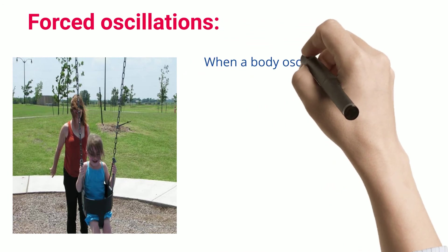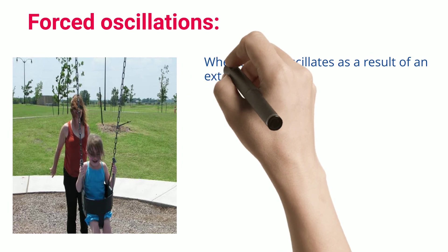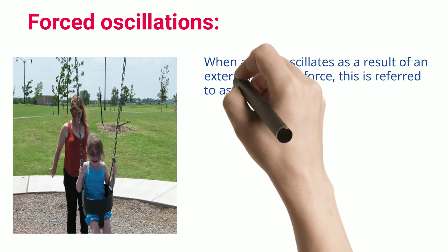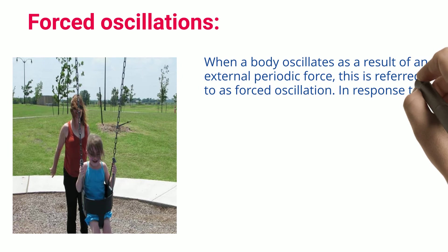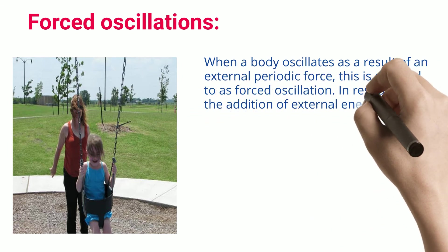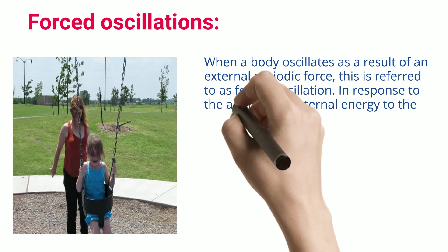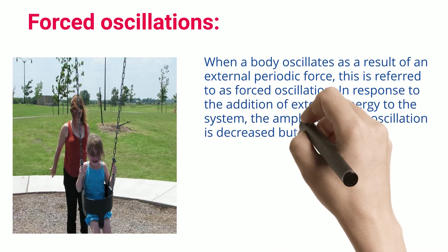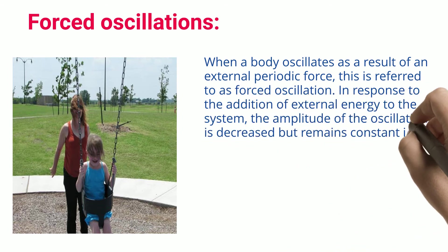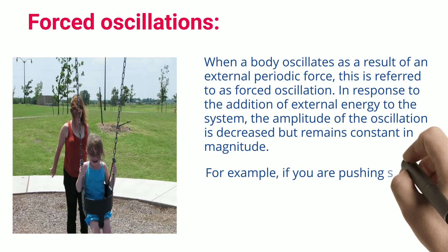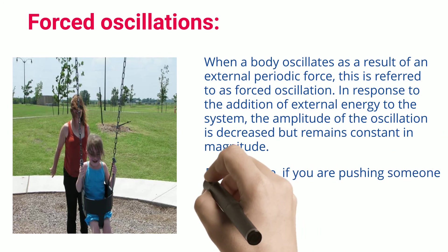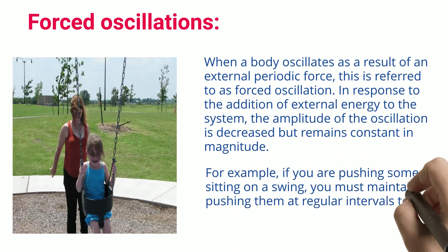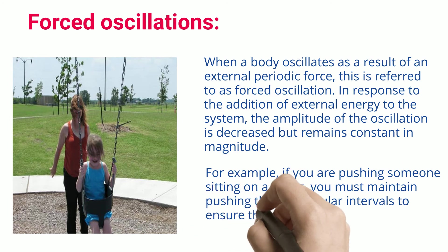When a body oscillates as a result of an external periodic force, this is referred to as forced oscillation. In response to the addition of external energy to the system, the amplitude of the oscillation is decreased but remains constant in magnitude. For example, if you are pushing someone sitting on a swing, you must maintain pushing them at regular intervals to ensure that the swing does not stop swinging.